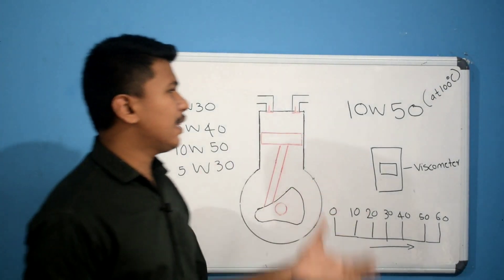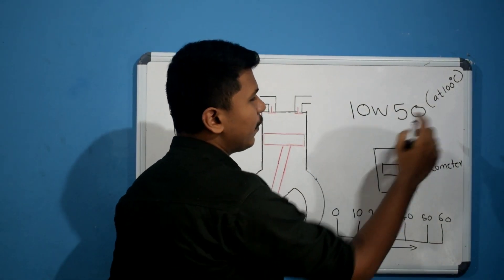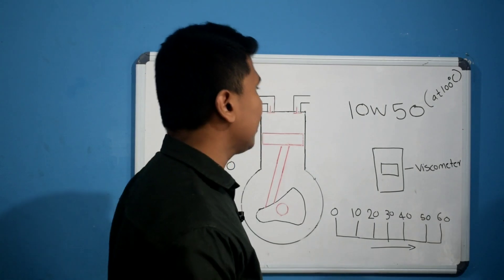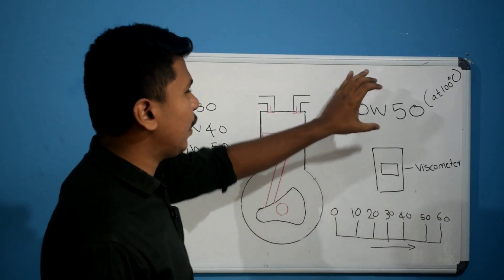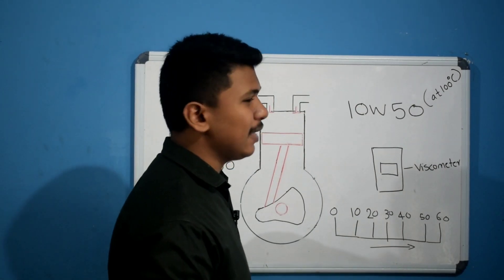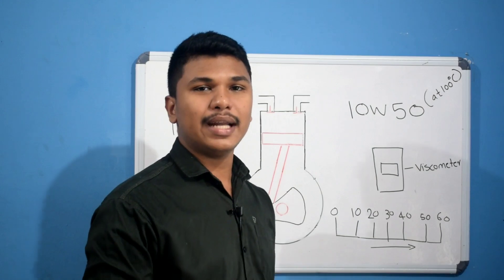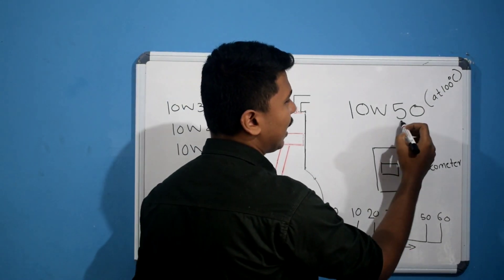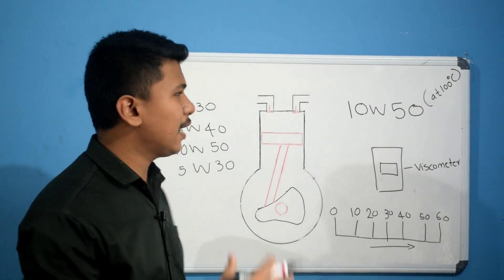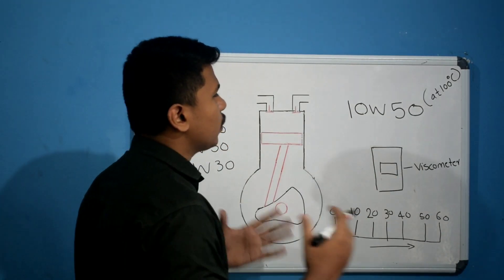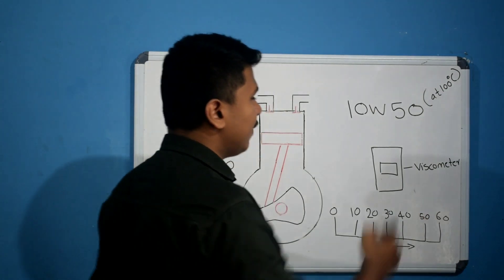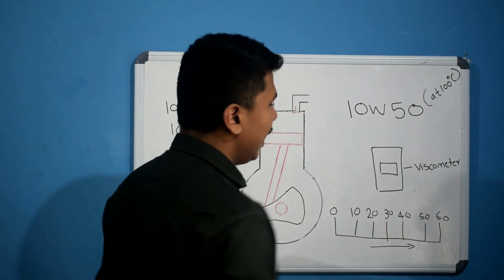Let us take the grade 10W-50 as an example. W stands for winter. The number before W, such as 10, indicates the viscosity behavior at cold temperatures. The number after W, such as 50, indicates the viscosity at 100 degrees Celsius operating temperature. The average engine operating temperature is around 100 degrees Celsius. Viscosity is measured using a viscometer instrument, which shows how much viscosity the oil has as it flows through.